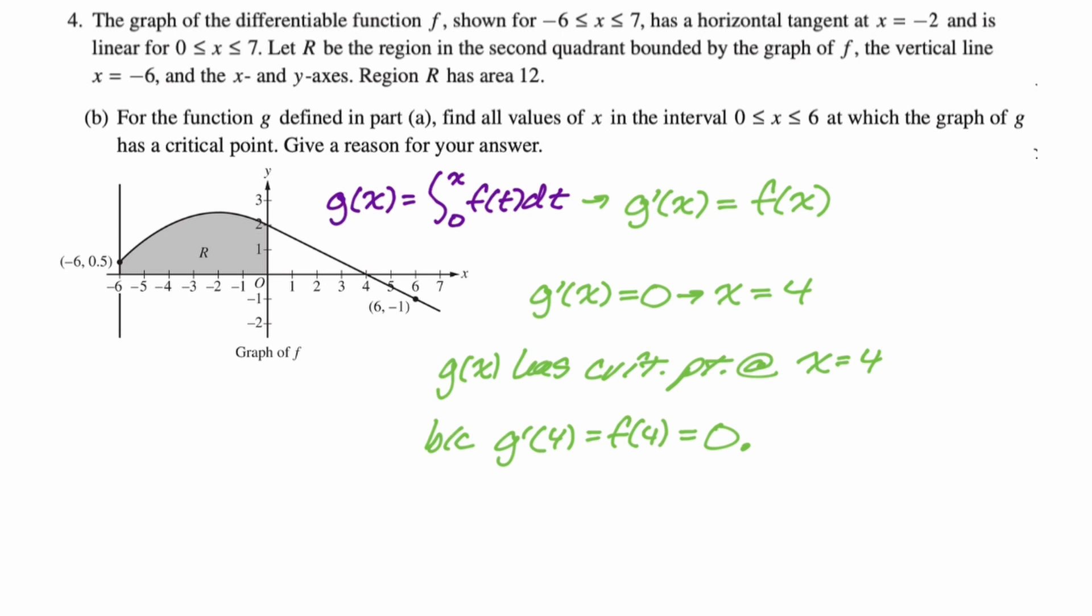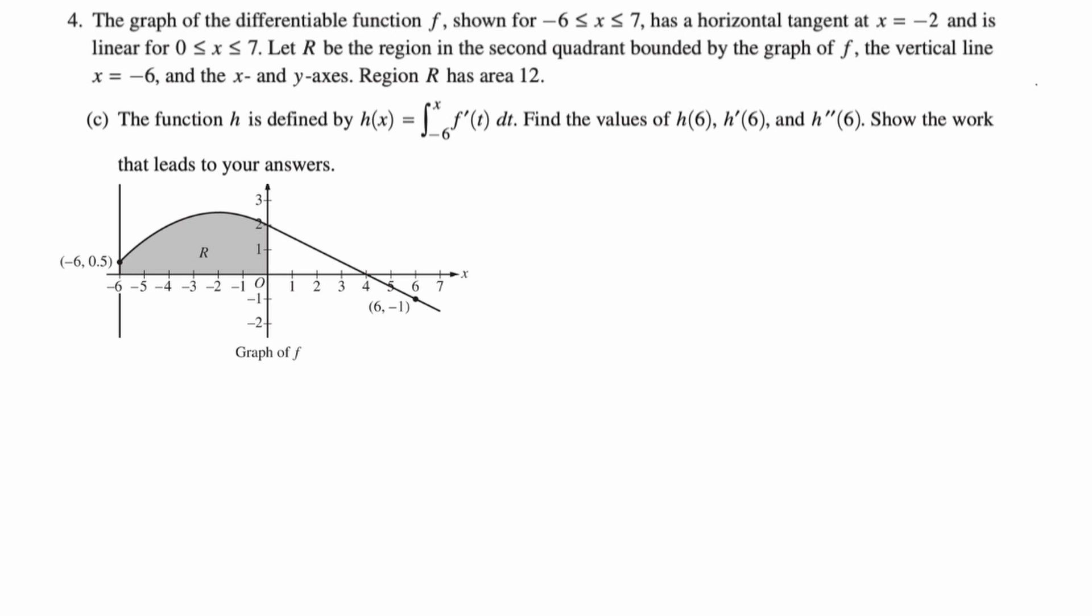Let's take a look at the next part, which I think is the last part of this one. So we have the function h is defined by h of x is the integral from negative six to x f prime of t dt. That's a big difference. Find the values of h of six, h prime of six, h double prime of six, show the work that leads to your answer.